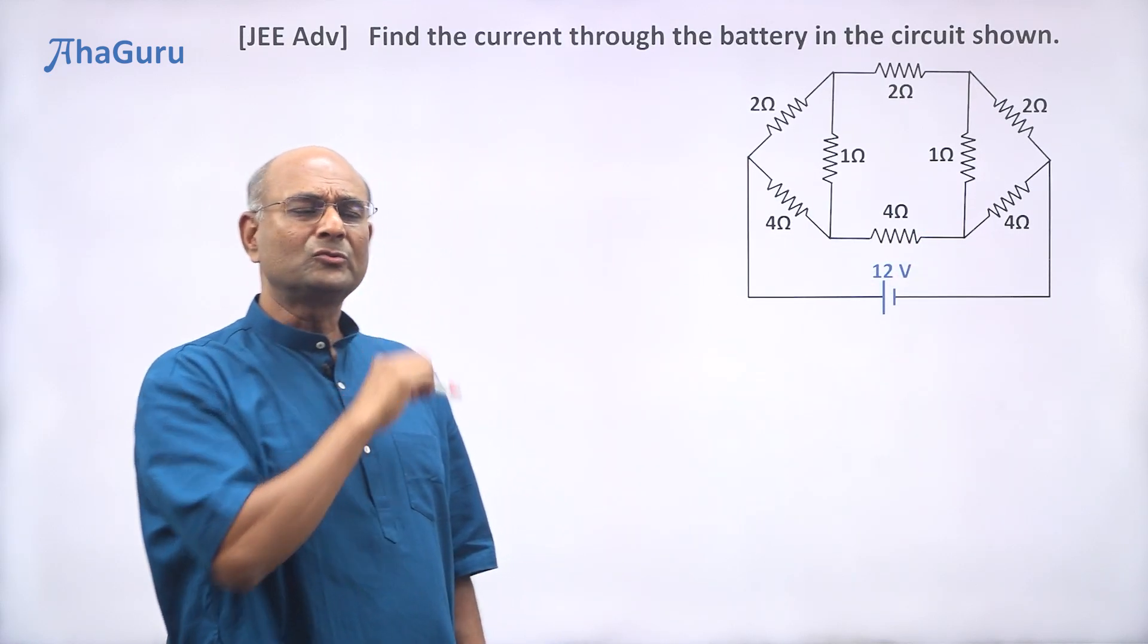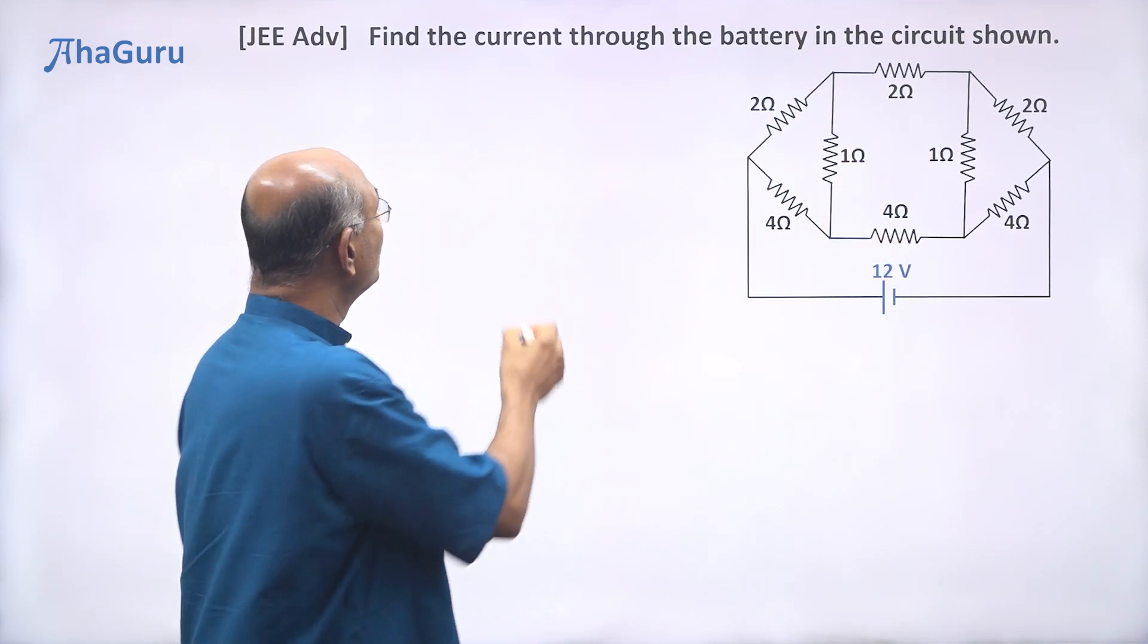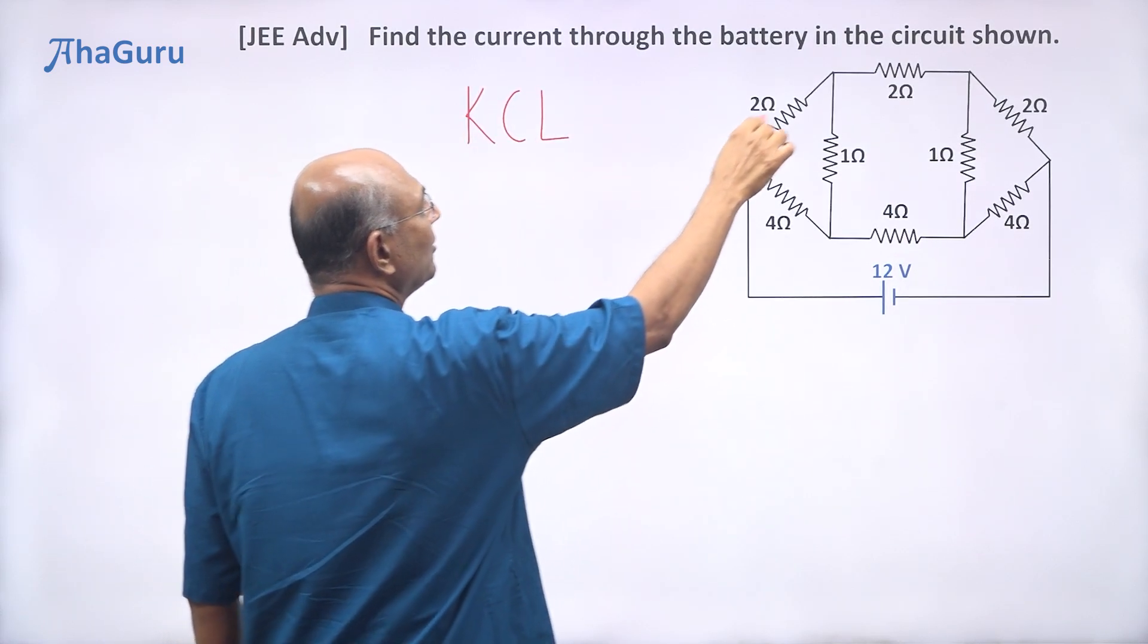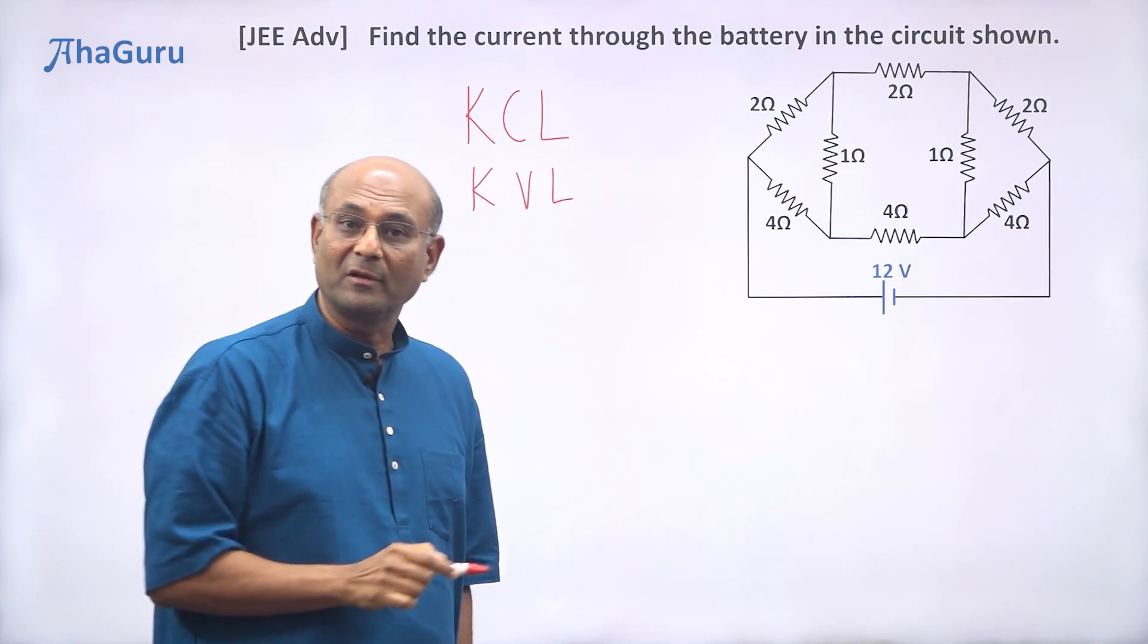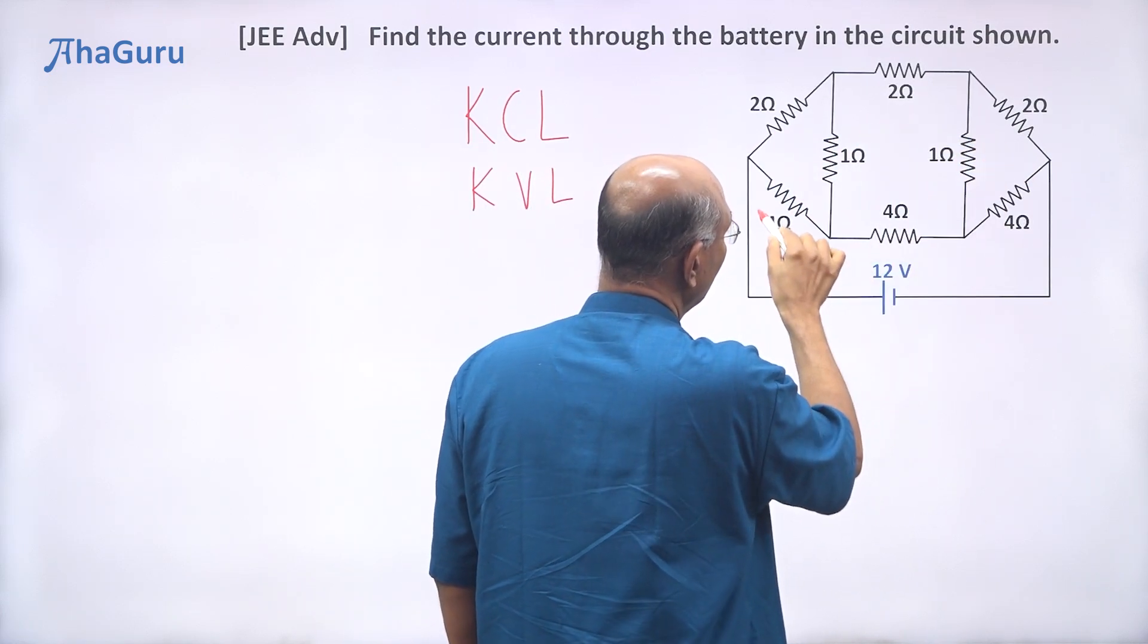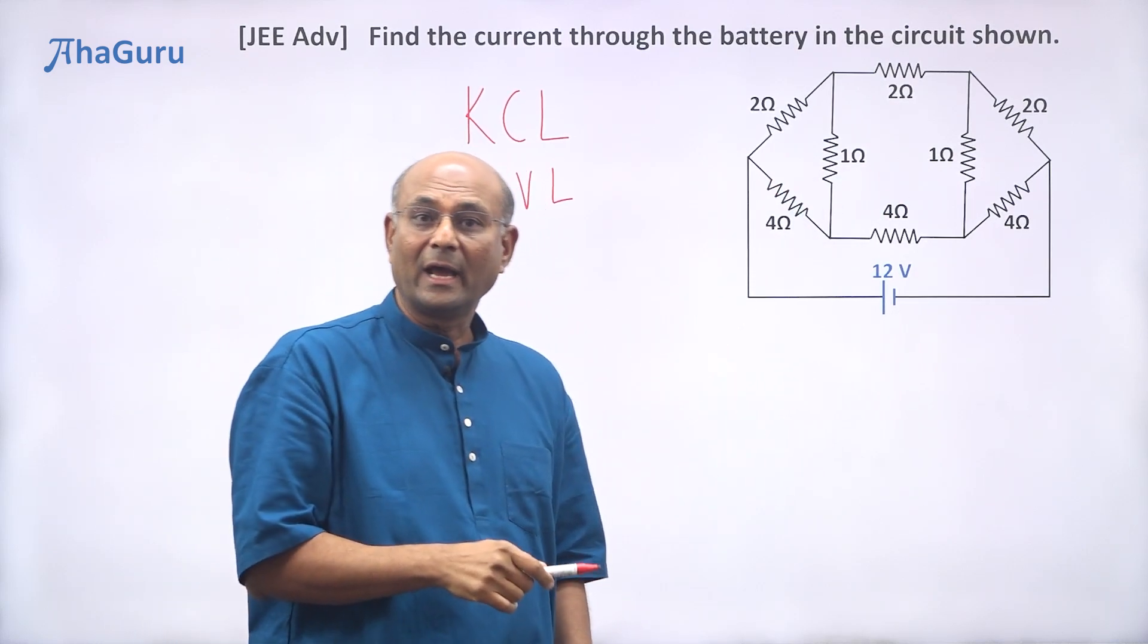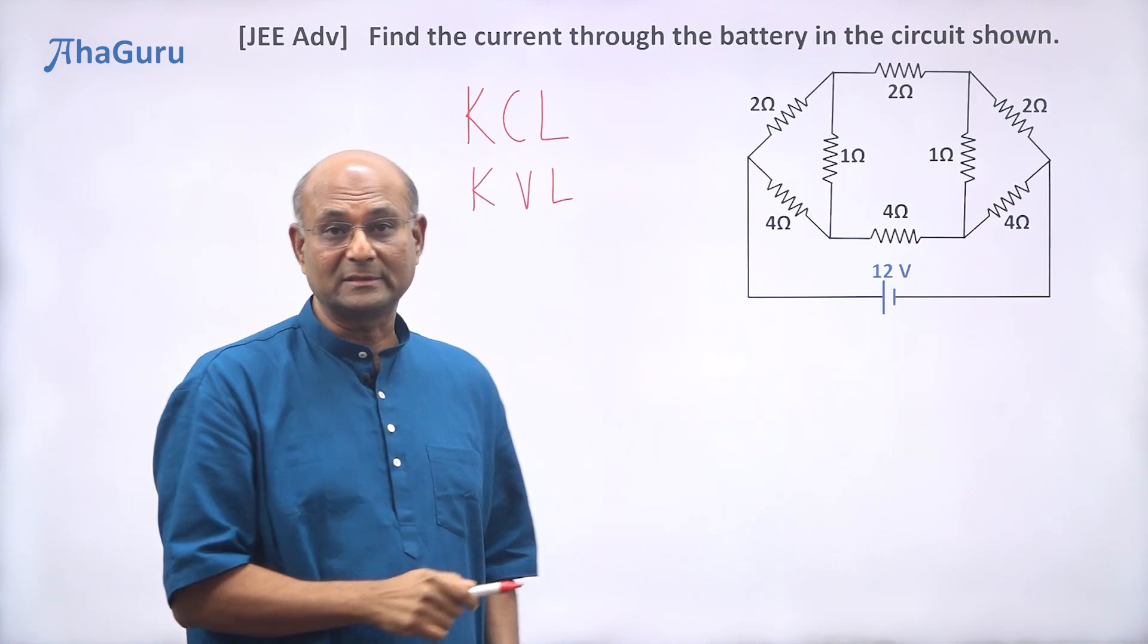How do we usually solve this? We assume a bunch of currents and then use Kirchhoff's current law to reduce the number of current variables, and then for each loop we write Kirchhoff's voltage law and solve. How many loops do we have? One, two, three, four. So we have four loops, four sets of equations, four variables. Four variables, four equations is going to take a lot of time to solve. It is really messy.